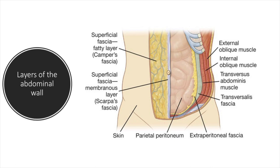Moving deeper below the superficial fascia you will encounter the muscular layer. You will have five different muscles split into two groups: the flat muscles and the vertical muscles. As you keep moving deeper you will encounter the transversalis fascia. Immediately deep to that is the extraperitoneal fascia, and then lastly you will come across the peritoneum. That was a brief overview of the layers of the abdominal wall — let's explore each in a little more detail.